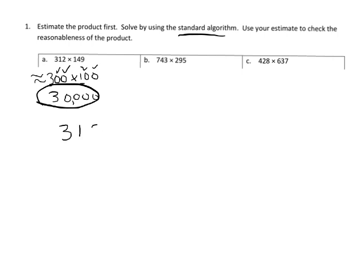Now let's just use that classic standard algorithm. So this is the kind of algorithm that parents should totally understand and remember back in the day, because nothing has changed here. This is the standard old algorithm. So nine times two is 18, carry the one. Nine times one is nine, plus one is 10, carry the one. Nine times three is 27, plus one is 28. So far we've got 2,808.